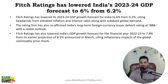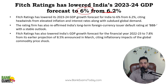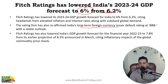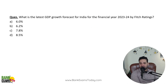Fitch Ratings has lowered India's GDP forecast for financial year 2023-24 from 6.2% to 6%. The long-term foreign currency issuer default rating of India remains BBB minus. The latest GDP forecast for India for FY 2023-24 by Fitch Ratings is 6%.